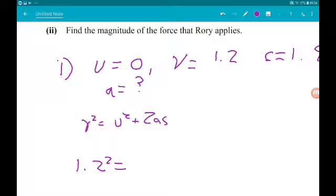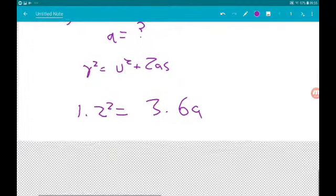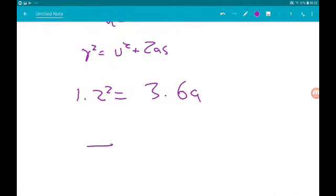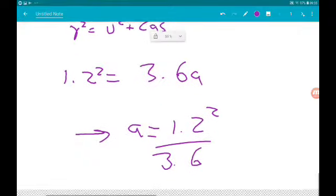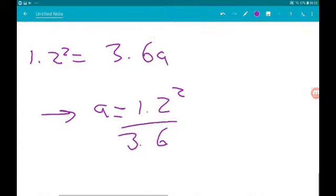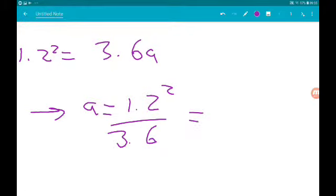So 1.2 squared is 3.6a. If we divide by 3.6 we get a is 1.2 squared over 3.6. It's got a common factor of 1.2 so that's 1.2 over 3 which is 0.4 meters per second squared.